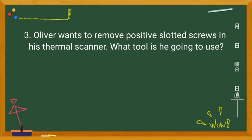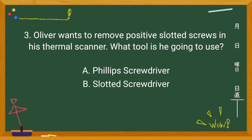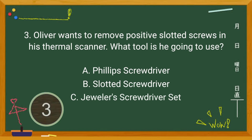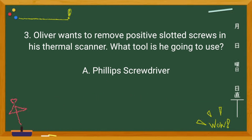Number 3: Oliver wants to remove positive slotted screws in his thermal scanner. What tool is he going to use? Letter A — Phillips screwdriver. Letter B — Slotted screwdriver. Or letter C — Jeweler's screwdriver set. If your answer is letter A, you got it right.